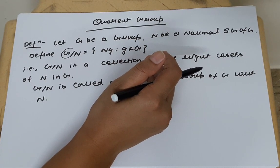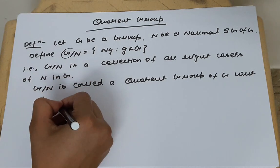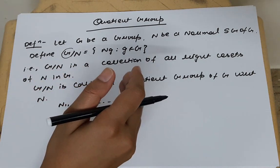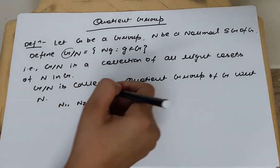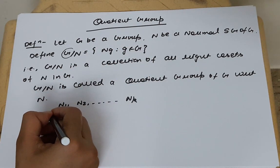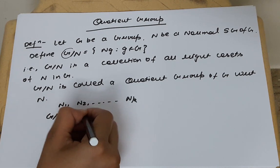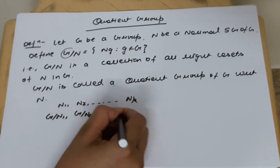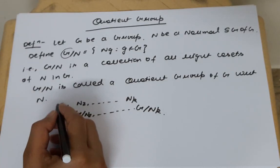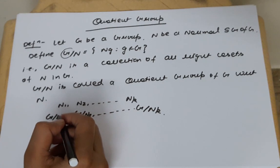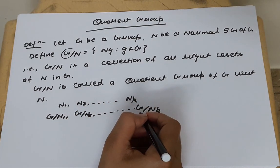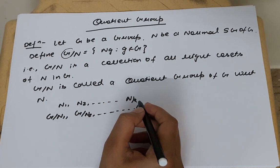Now, if we have different normal subgroups, suppose N1, N2, and so on, NK. Then we can form different quotient groups out of that, like G by N1, G by N2, and so on G by NK. G by N1 is called a quotient group with respect to N1 in G. G by N2 is called a quotient group with respect to N2 in G, and so on, quotient group with respect to NK in G.